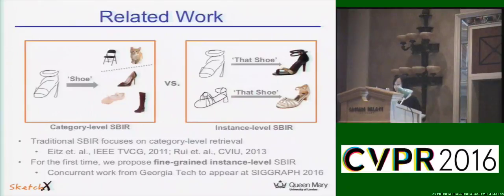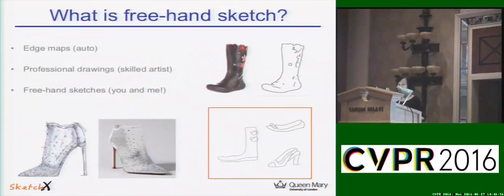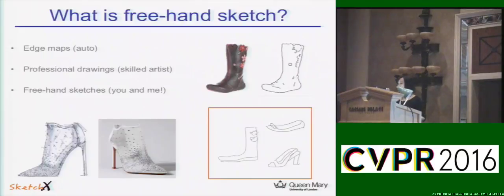Being able to retrieve images using sketch is not new. However, the key difference is that for the first time we focus on fine-grained instance-level sketch-based image retrieval (SBIR). There is also a concurrent work from Georgia Tech presented at SIGGRAPH last month doing similar work. The sketch we study here is human freehand sketch, which is different from edge maps and professional sketches. Because people have different drawing abilities and styles and there is no reference when drawing, this kind of sketch often exhibits highly deformed and abstract appearance.